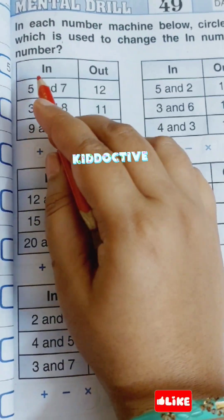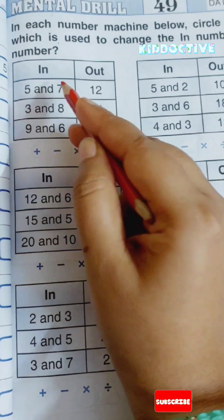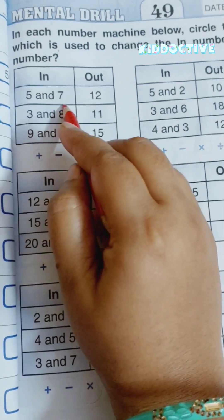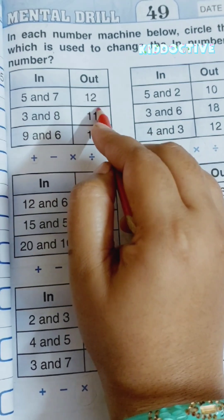So we are going to check which operation applies for this in and out. By adding or by multiplying, we are getting the output.